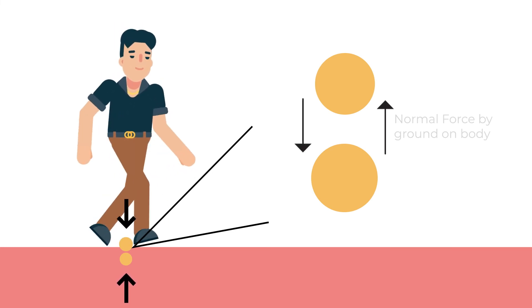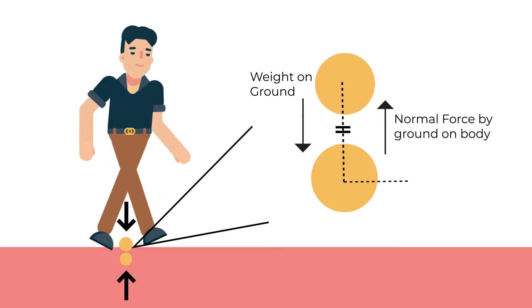As electrons of atoms come close, an opposite repulsive force starts acting on the foot. This force is known as normal force. Normal means perpendicular and in the majority of cases, this force acts perpendicular to the surface.